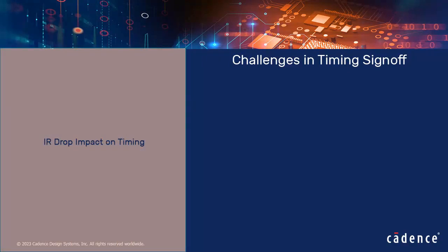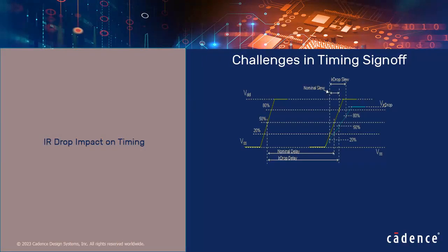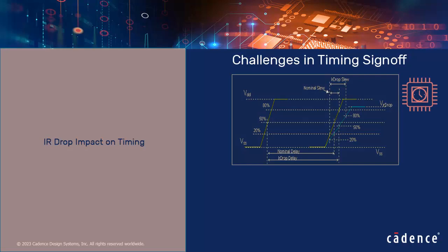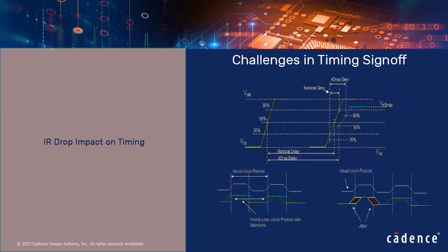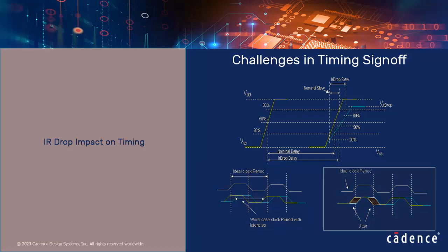Timing is very sensitive to voltage variations. IR drop on power rails can significantly affect cell and net delays. The delays computed based on IR drop observed during high and low switching activity periods cause skew and jitter problems.